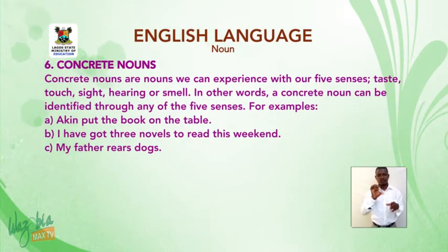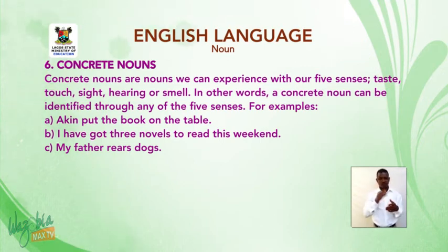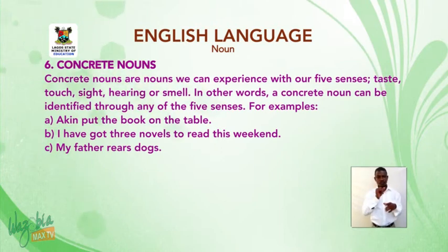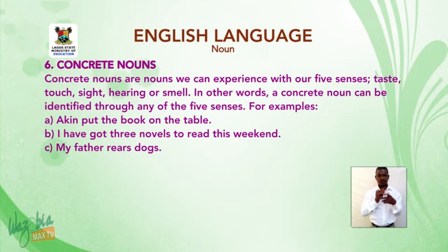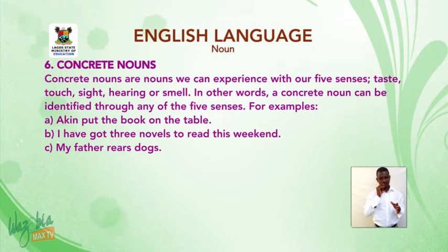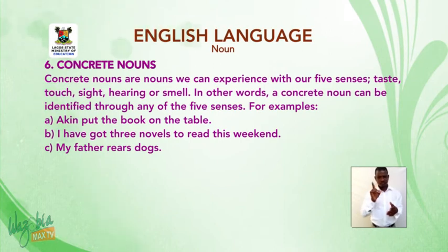Six: concrete nouns. Concrete nouns are nouns we can experience with our five senses: taste, touch, sight, hearing, or smell. In other words, a concrete noun can be identified through any of the five senses. Examples: A: 'I can put the book on the table.' B: 'I've got three novels to read this weekend.' C: 'My father rears dogs.'